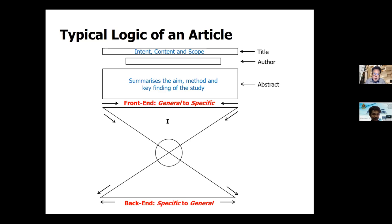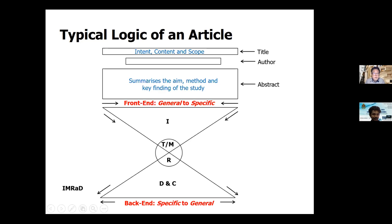There are different parts to the article — I'm not using these as section headings, but as conceptual parts. The first part is the introduction, which also includes the review of previous studies. Then we have theory and methods, results, and discussion and conclusions. Generally, a lot of authors are very good at describing their theory and methods and reporting on results, but it is actually contextualizing their study against previous studies that really needs a lot of attention. This structure follows pretty much the IMRaD model.